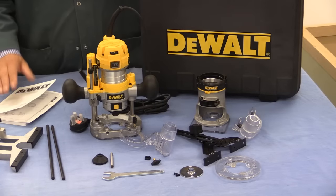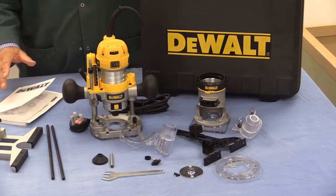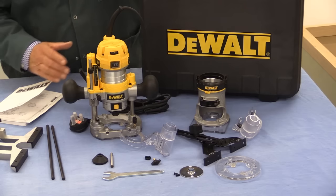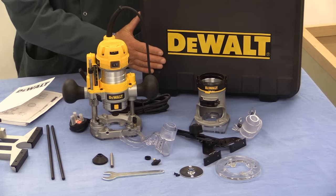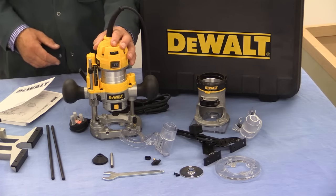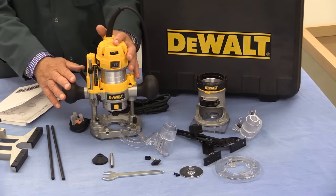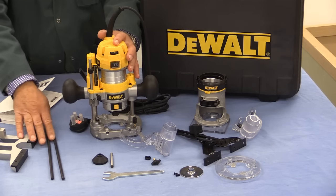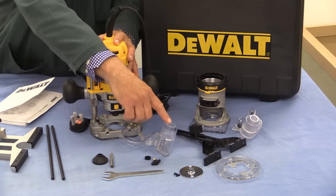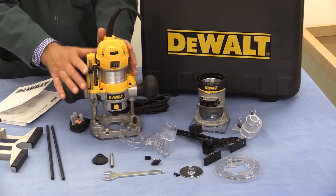Let's take a look at what we get in the 26204 kit, and this is the most comprehensive of the three kits available. Obviously, it comes in a storage box like this, quite sturdy. Then you have the main router itself on a plunge base. There's a parallel fence which works with this plunge base, and there's also a dust collection adapter.